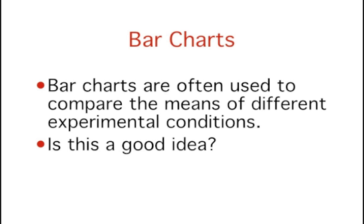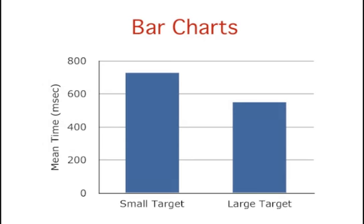Bar charts are often used to compare the means of different experimental conditions. This bar chart shows the mean time, measured in thousandths of a second, it took one of us to move the computer mouse to either small targets or large targets. On average, more time was required for small targets than for large ones. The mean for small targets was over 700 milliseconds, while the mean for large targets was a little over 500 milliseconds.